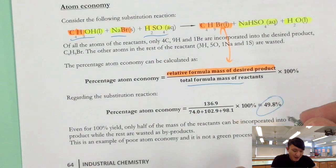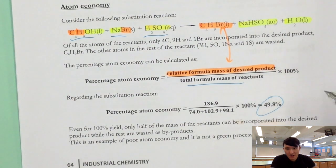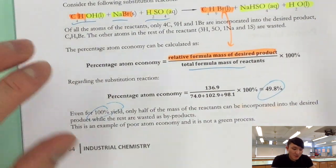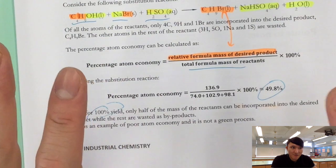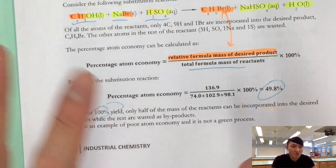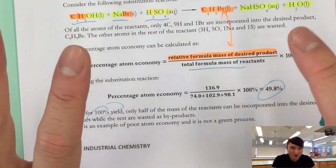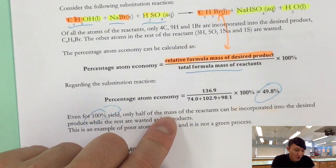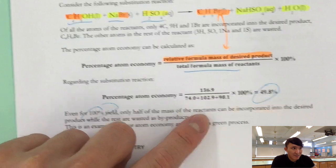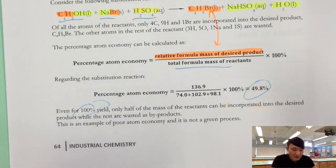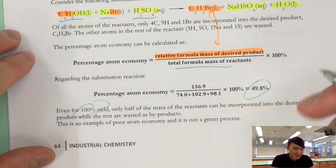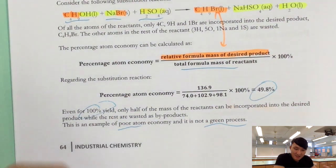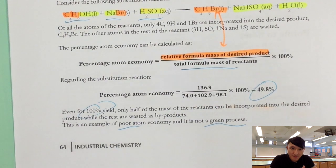So what does it mean by 50% atom economy? That means even if you have 100% yield, even though there is no loss of reagent, no loss of product, no error, no spillage of liquid, your experiment was done perfectly—still, only half of the mass of the reactants ends up being the product. Therefore we say that this atom economy is quite poor and this is not a green process from the atom economy perspective.